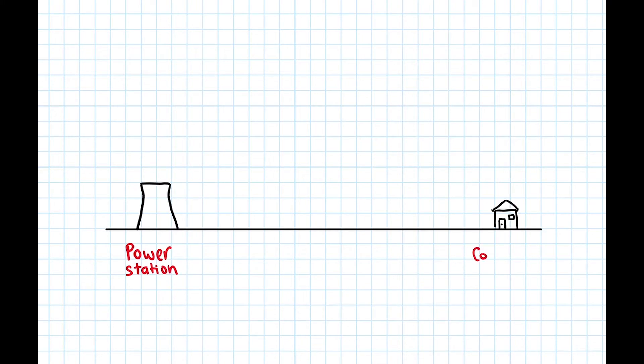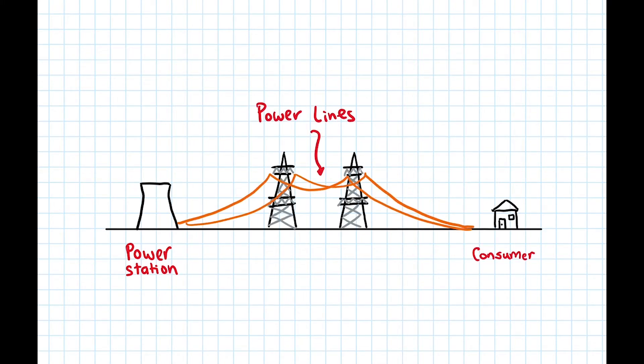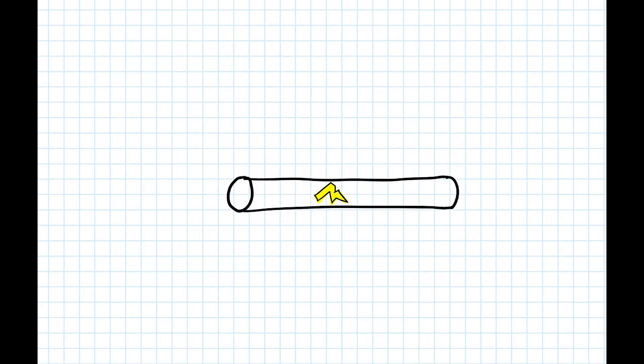In between a power station and your house, we have power lines transporting electricity. As electrical current passes these cables, energy can be lost in the form of heat.